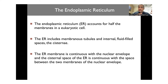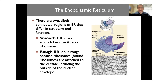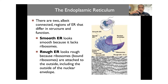The cisternal space of the ER is continuous with the space between the two membranes of the nuclear envelope. This also facilitates the initial steps of protein synthesis on the rough endoplasmic reticulum. There are two kinds of endoplasmic reticulum: rough and smooth. The distinction is simply based on their texture — the smooth ER lacks ribosomes, while the rough ER looks rough because ribosomes are bound to its membrane.